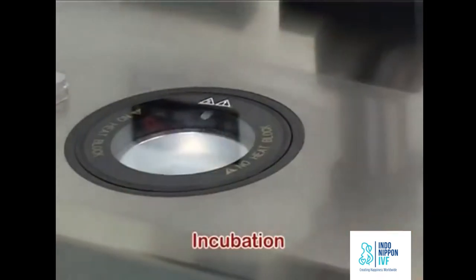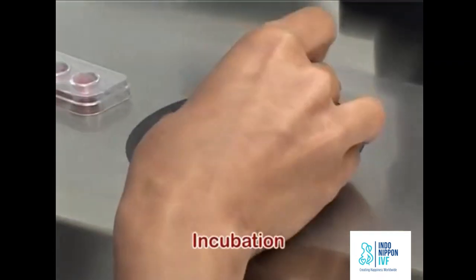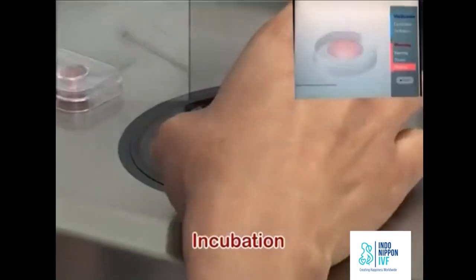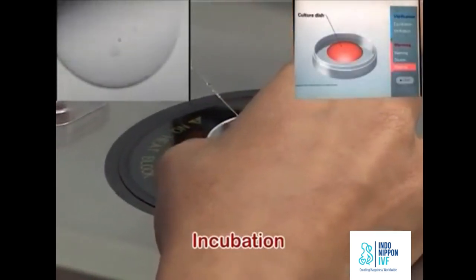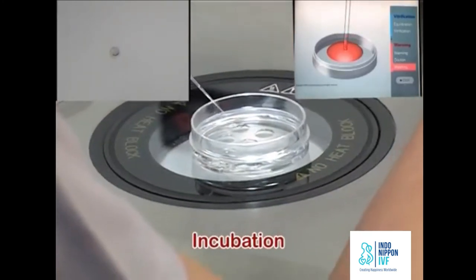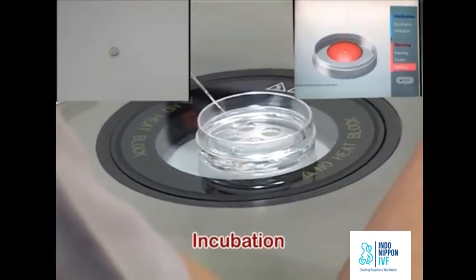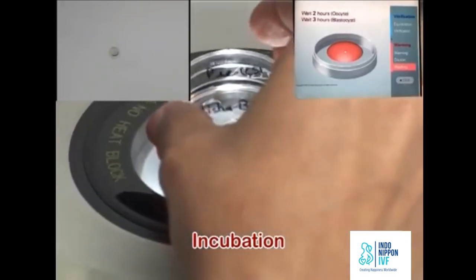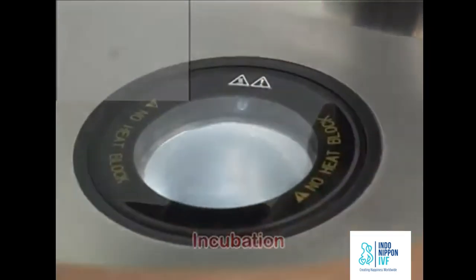Transfer the oocyte in the droplet of the appropriate culture media for recovery. After warming, 4 hours culture for oocyte is recommended as the spindle recovery takes about 3 to 4 hours. So wait for 4 hours after warming before fertilizing the oocyte with ICSI.